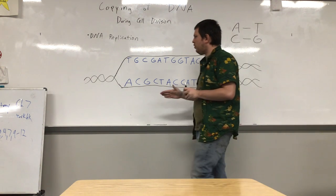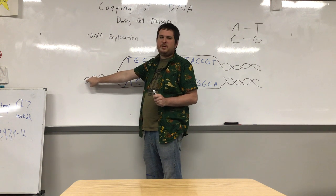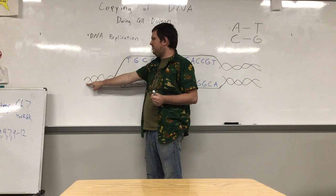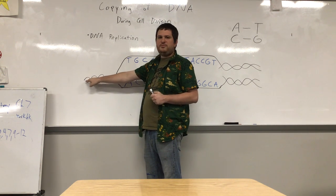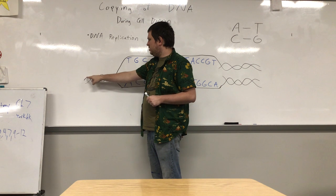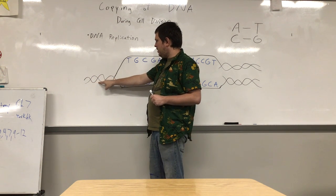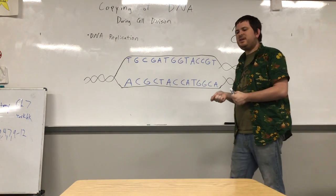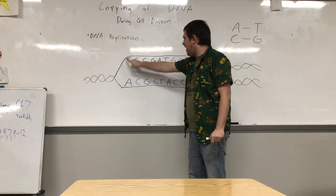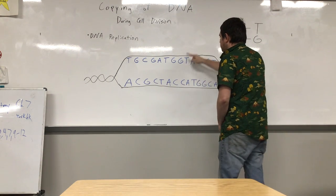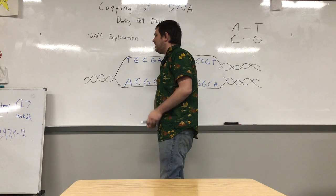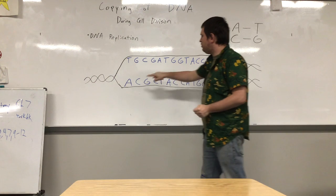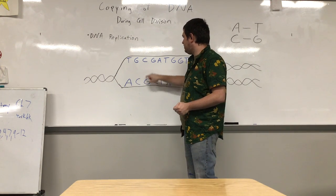We are going to start with one copy of our DNA, which is what each of your cells has — a single copy of that DNA. As we said before, it is a double helix shape, so it is a twisted ladder. But we are then going to unzip it, kind of like a zipper. You have an enzyme that goes along and unzips it and separates the two separate parts of that DNA.